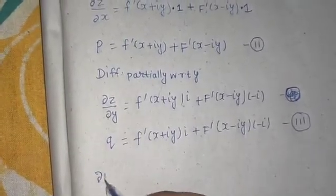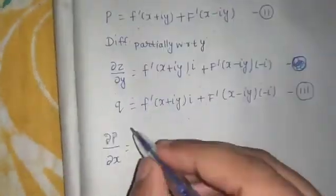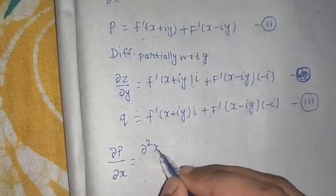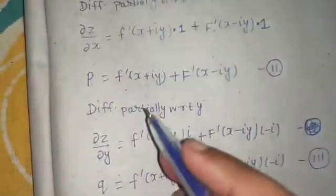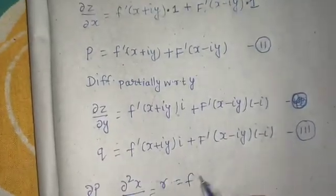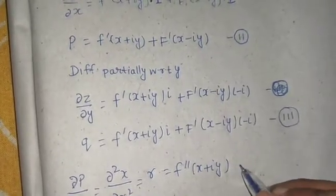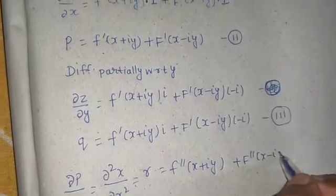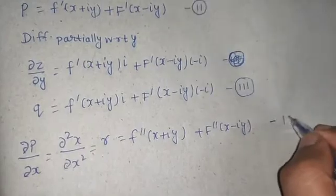Differentiating equation two with respect to x gives del p / del x, which is also written as del²z / del x², denoted r. This gives r = f''(x + iy)·1 + f''(x − iy)·1, so r = f''(x + iy) + f''(x − iy). This becomes equation number four.